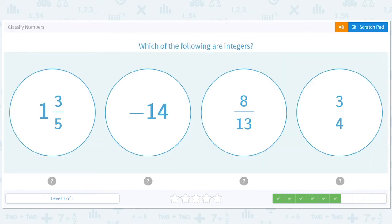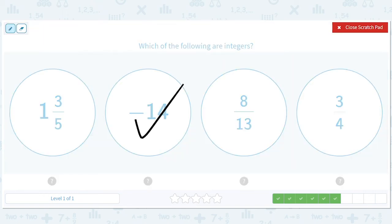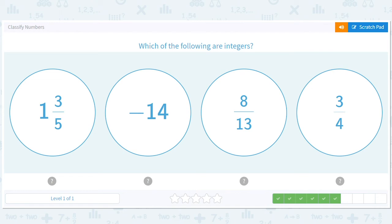Which of the following are integers? Everything without a fraction. And that's the only one. Without a fraction or decimal part. So we're going to go with negative 14.